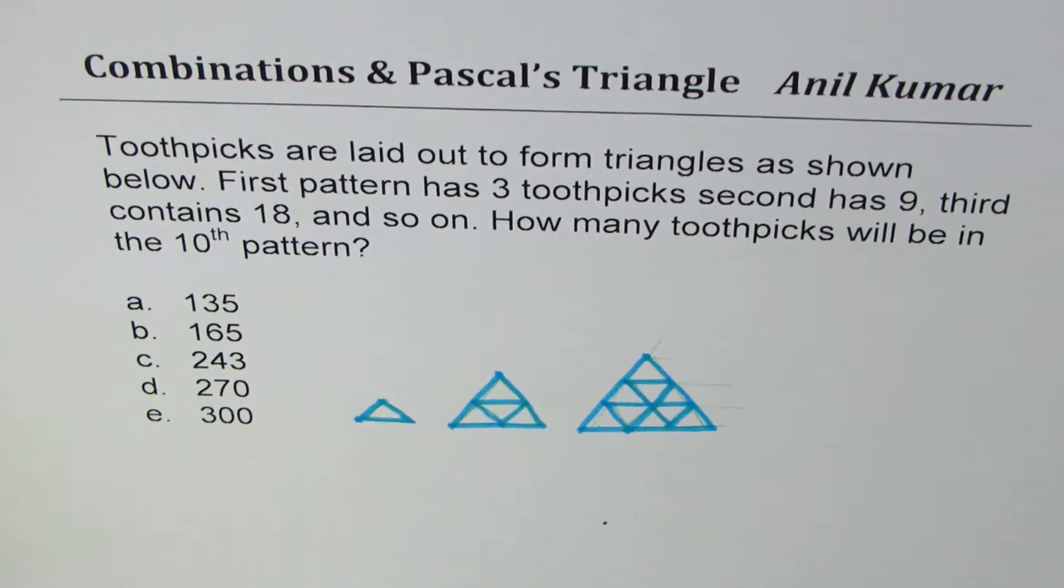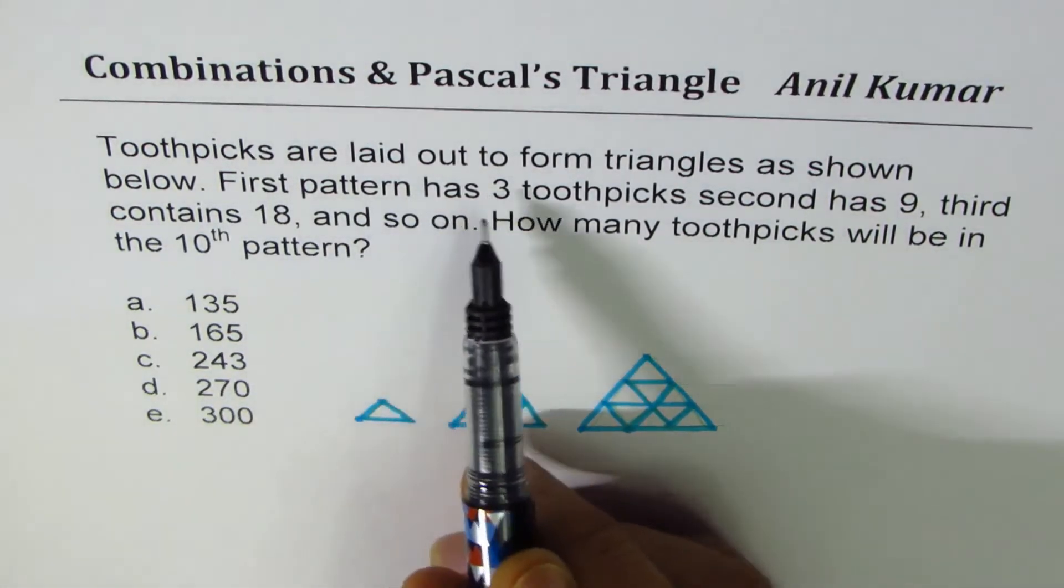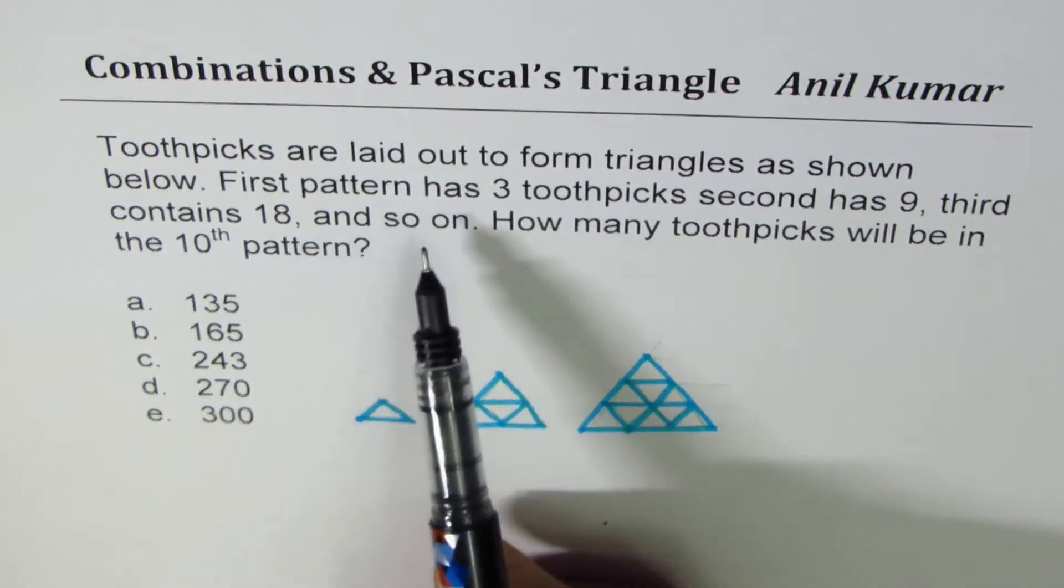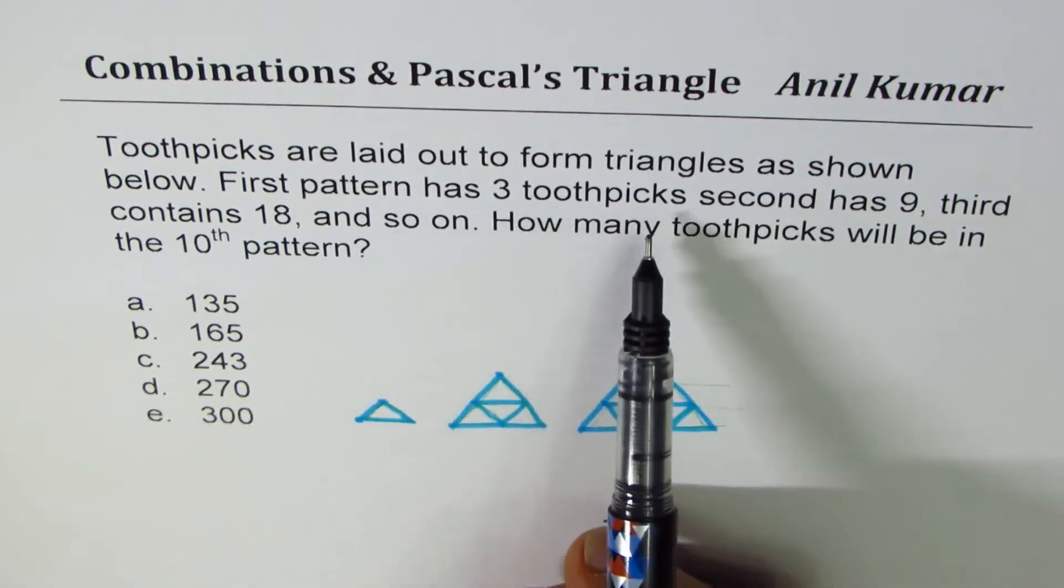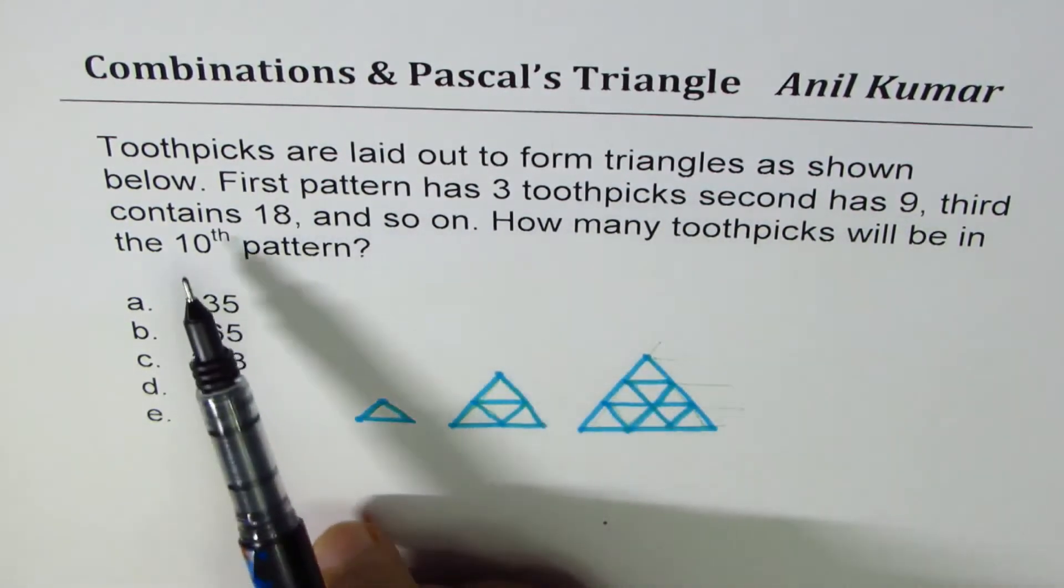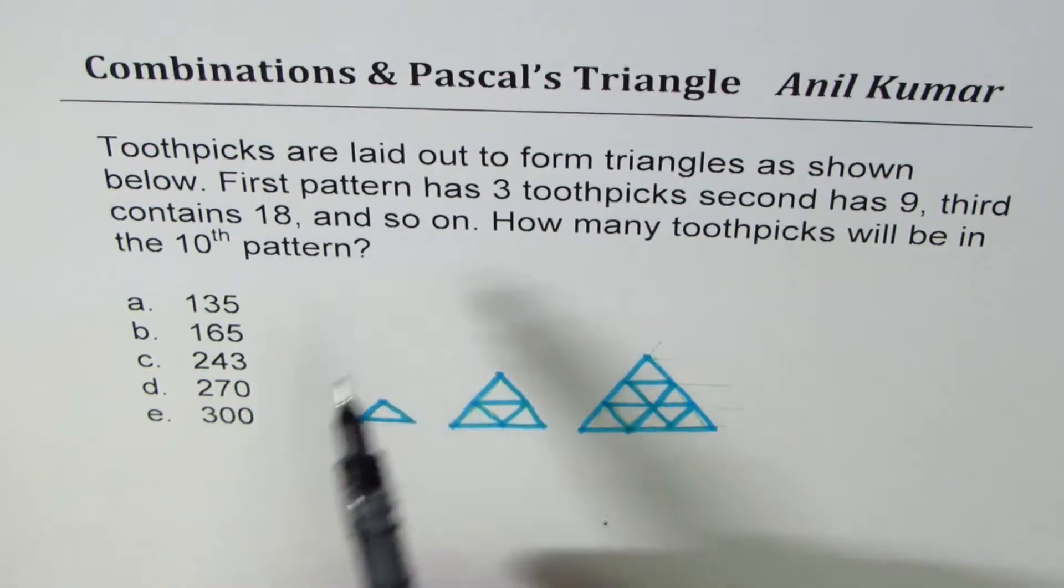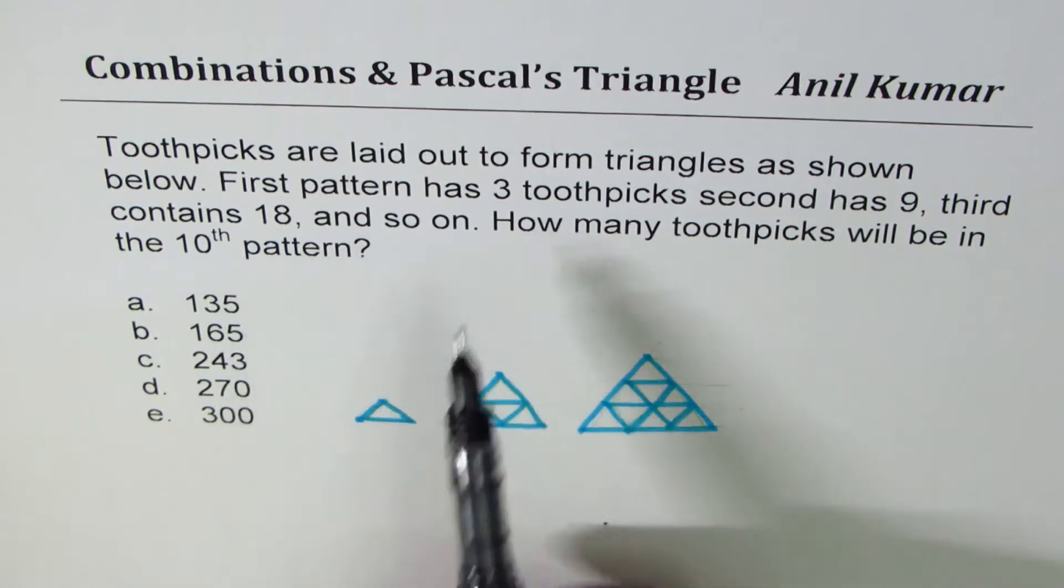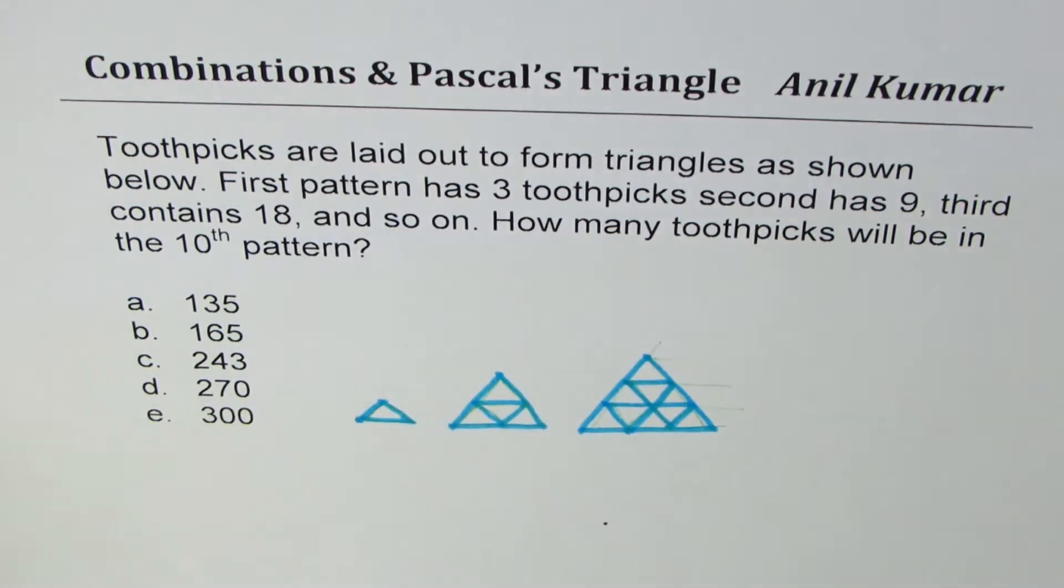The question here is: toothpicks are laid out to form triangles as shown below. First pattern has 3 toothpicks, second has 9, third contains 18 and so on. How many toothpicks will be in the 10th pattern? You are given a couple of choices.